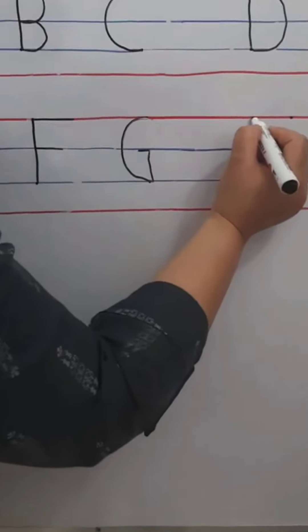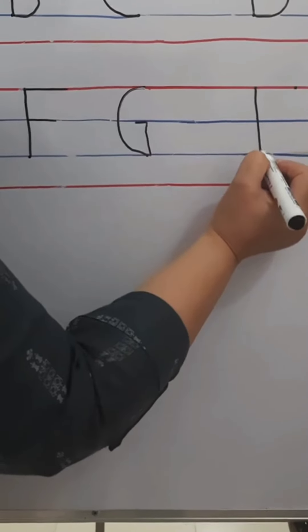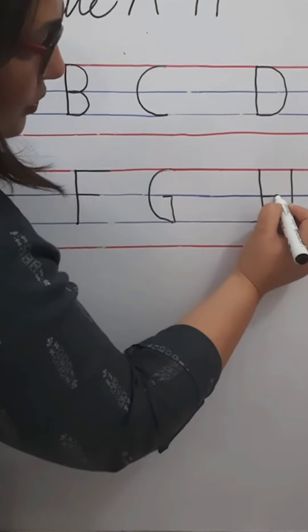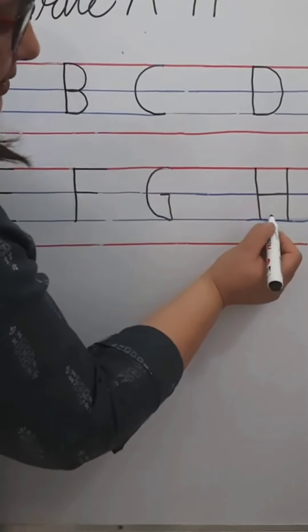H banane ke liye, aminok pehle standing lines banayenge. And with sleeping line, aminok pehle standing lines ko join karenge. This is letter H.